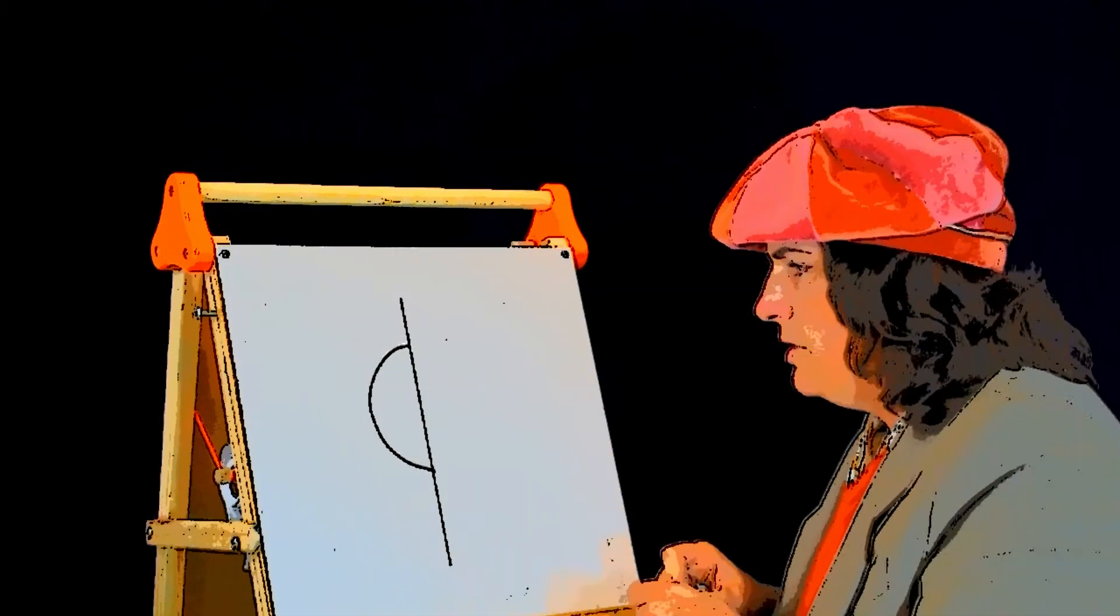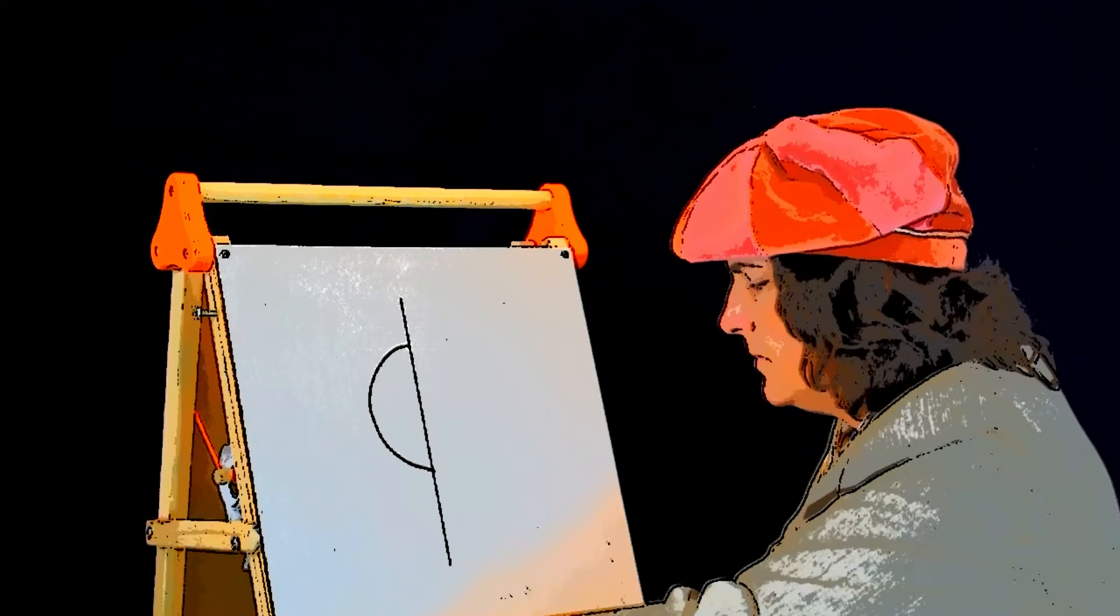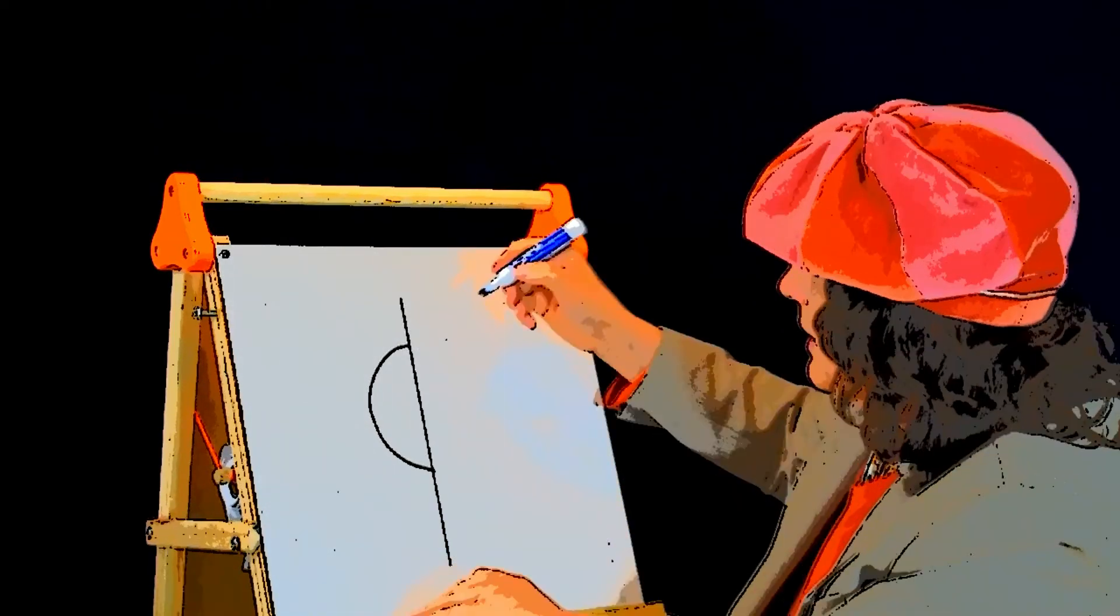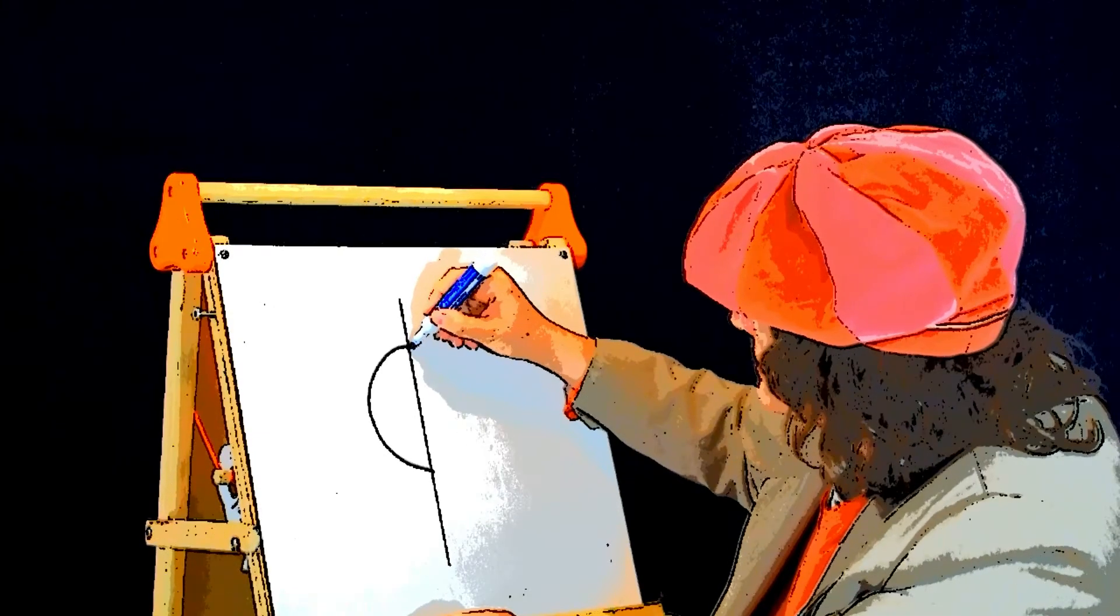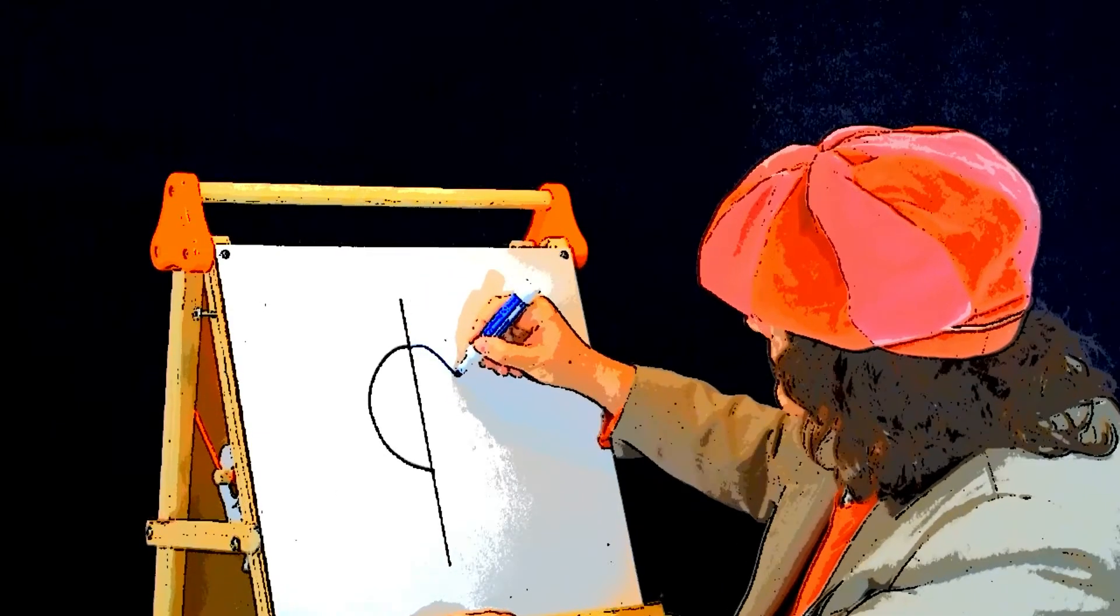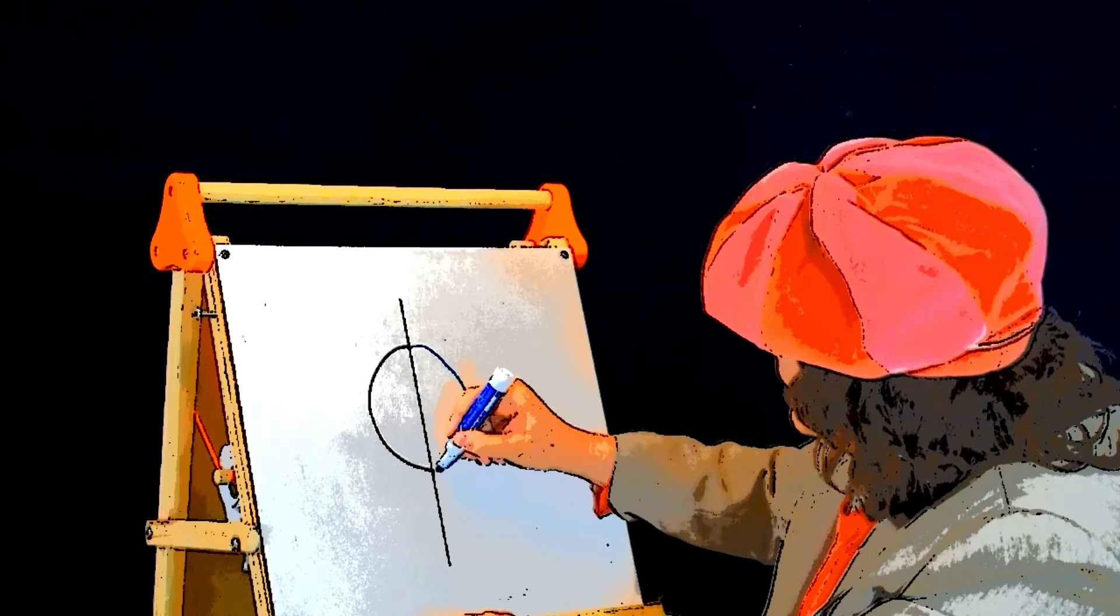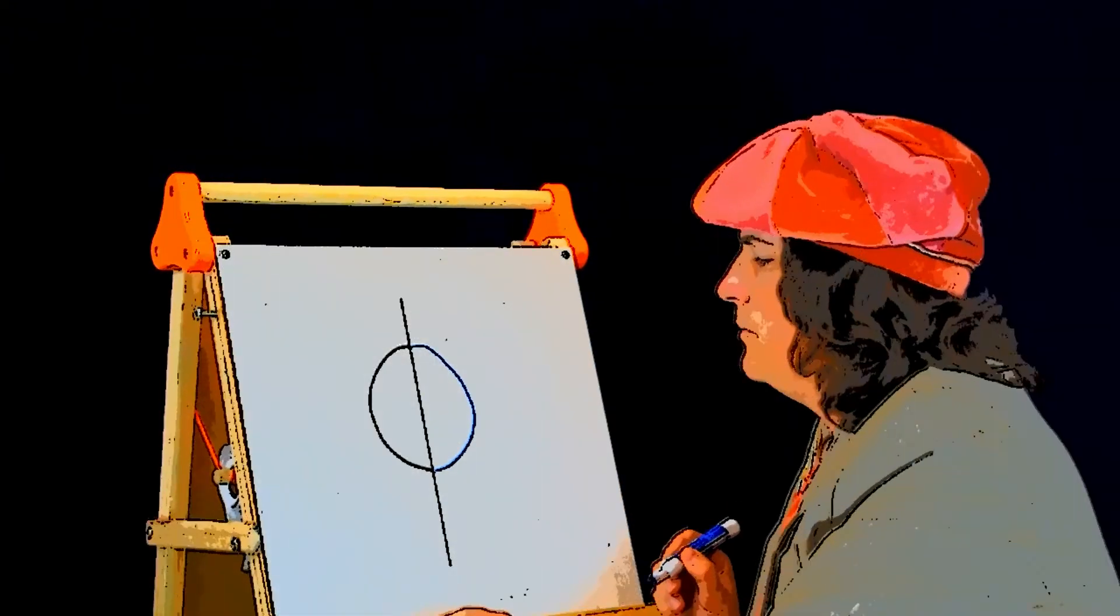So, let's do the mirror image. I get my blue marker. I start at the center. This time, I will go the opposite direction. I will go to the right. Curve it around. Meet up at the dot on the line below.